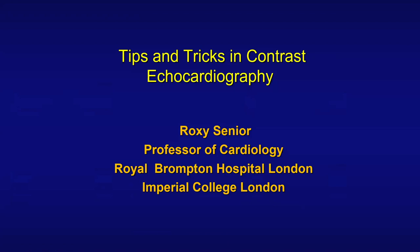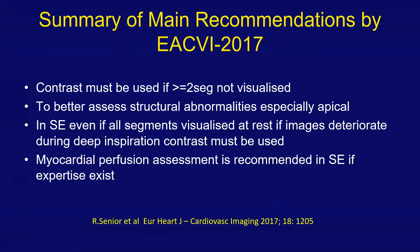My talk is on tips and tricks in contrast echo. I'll be talking about second-generation contrast echo, which opacifies the heart and stays in the circulation for a longer time to see every part of the heart. This is the summary of the main recommendation by EACVI 2017: contrast agents should be used if two or more segments are not visualized, to better assess structural abnormalities especially the apical abnormalities, and in stress echo even if all segments are visualized at rest. If images deteriorate during stress, contrast must be used. Myocardial perfusion assessment is recommended if expertise exists in the department.